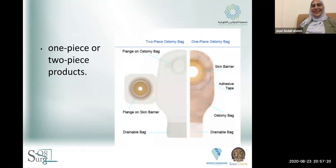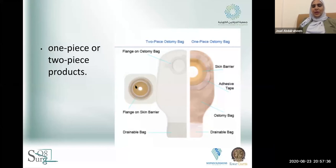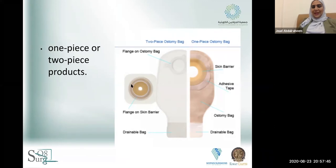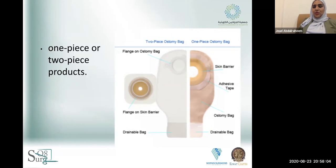You have either a one-piece or two-piece appliance. One-piece is more flexible to use. Two-piece is good but the plastic part is less flexible and harder to handle. For obese patients, one-piece is better because it is more flexible, easier to attach to the skin, and takes the contour of the body.